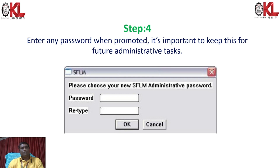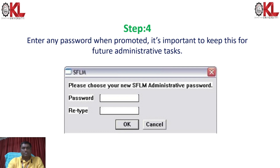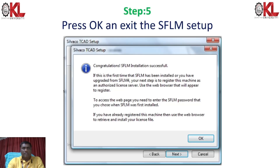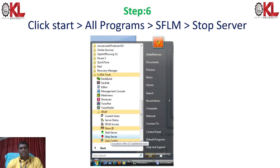Once the installation completes, it will ask for the SFLM administration password. Choose a password, retype it, and keep it for future use as you will need it for other administration tasks. Click OK. A window will appear saying the installation was completed successfully. Press OK and exit the SFLM setup.